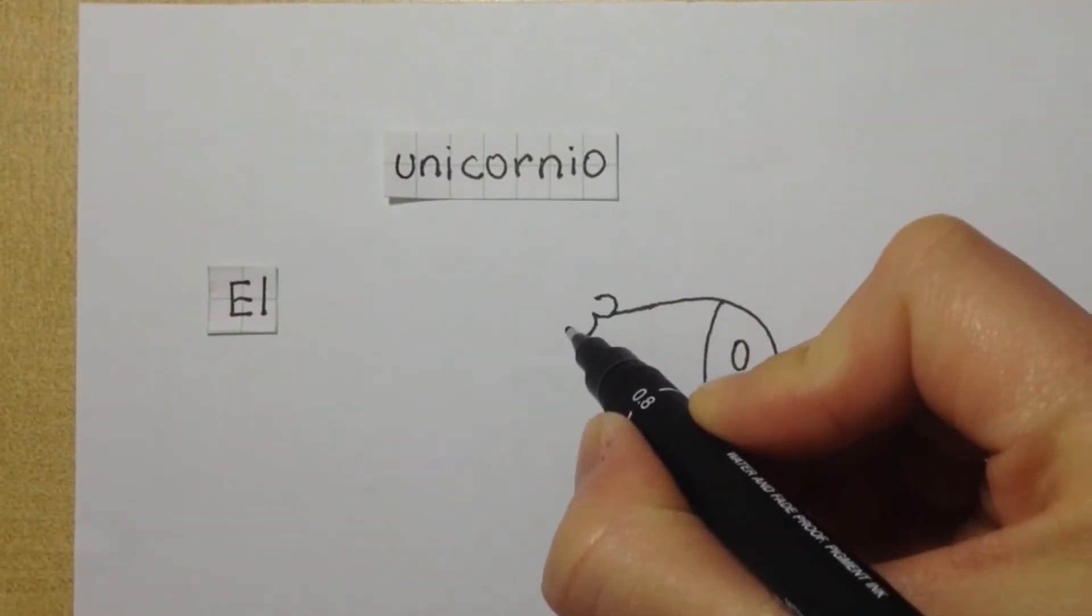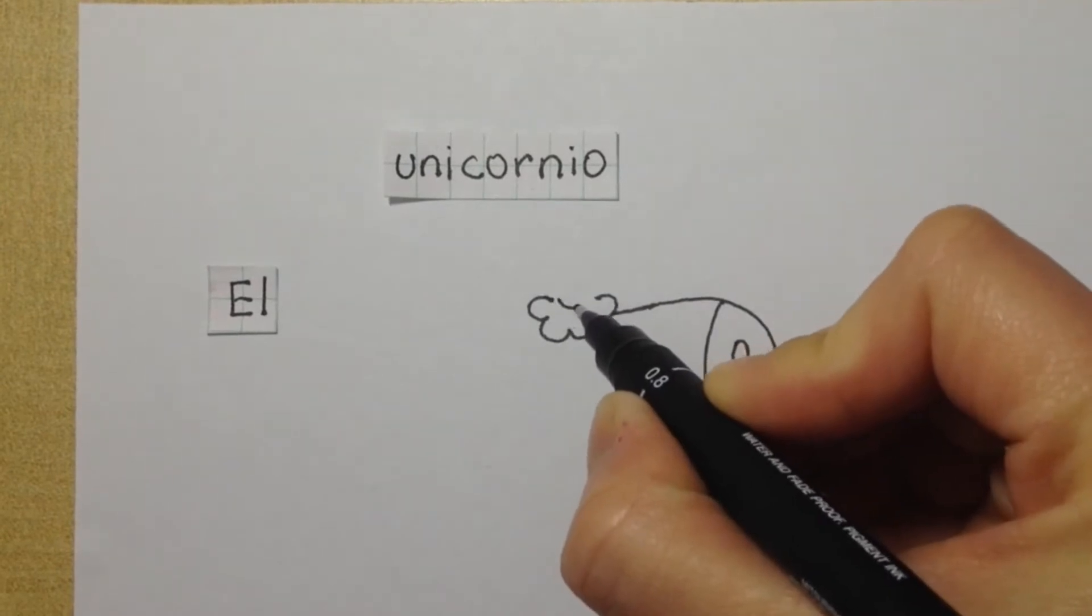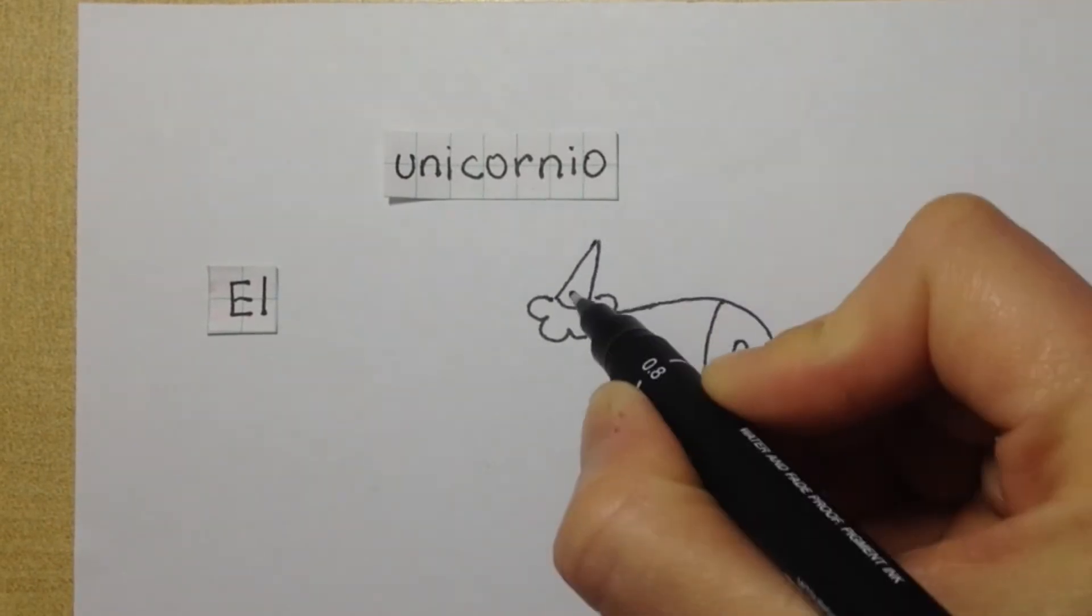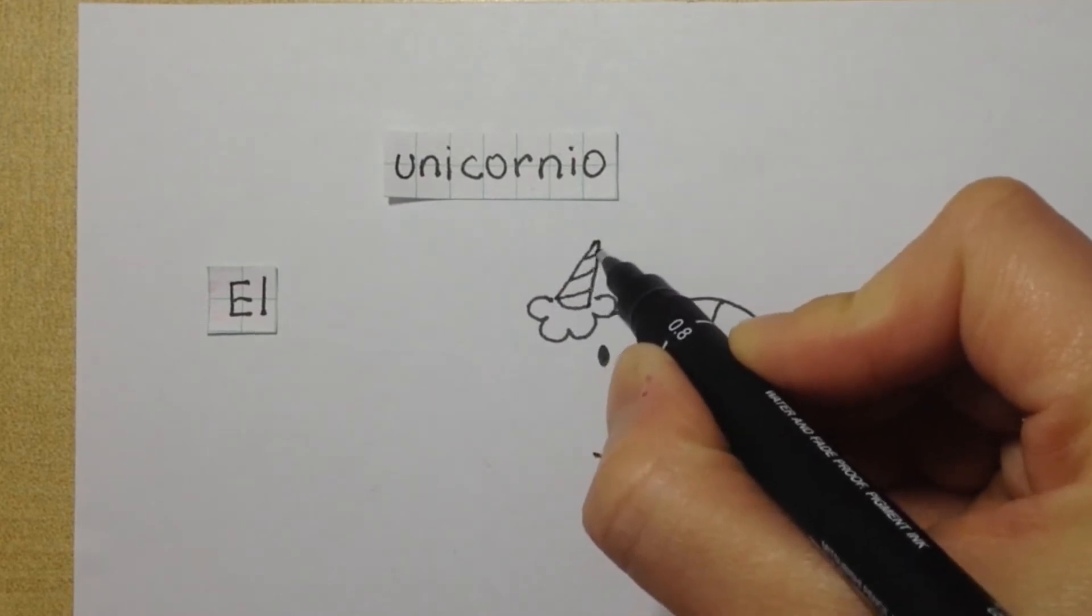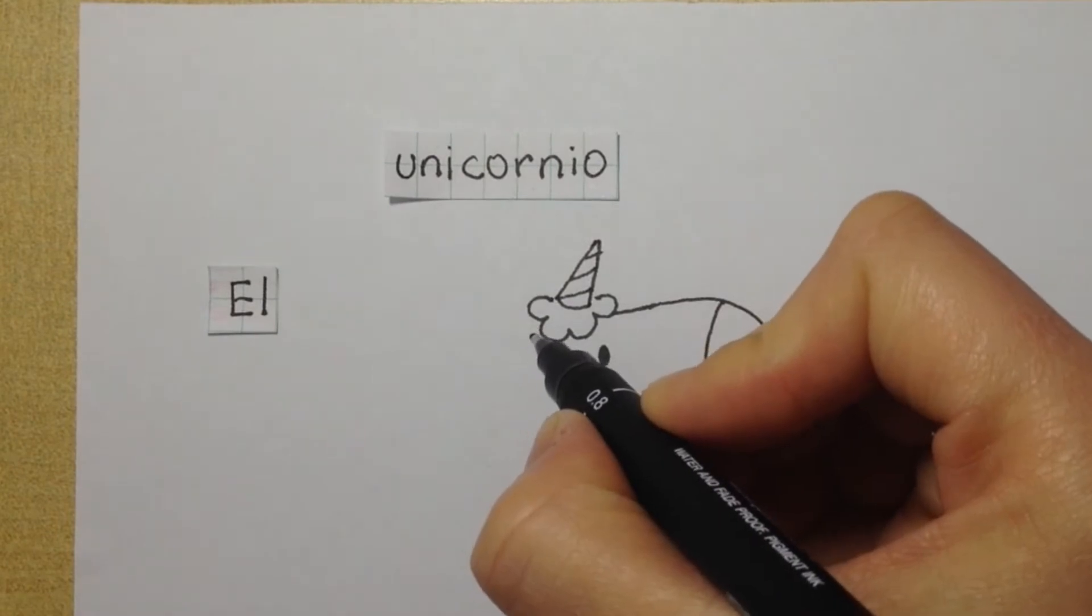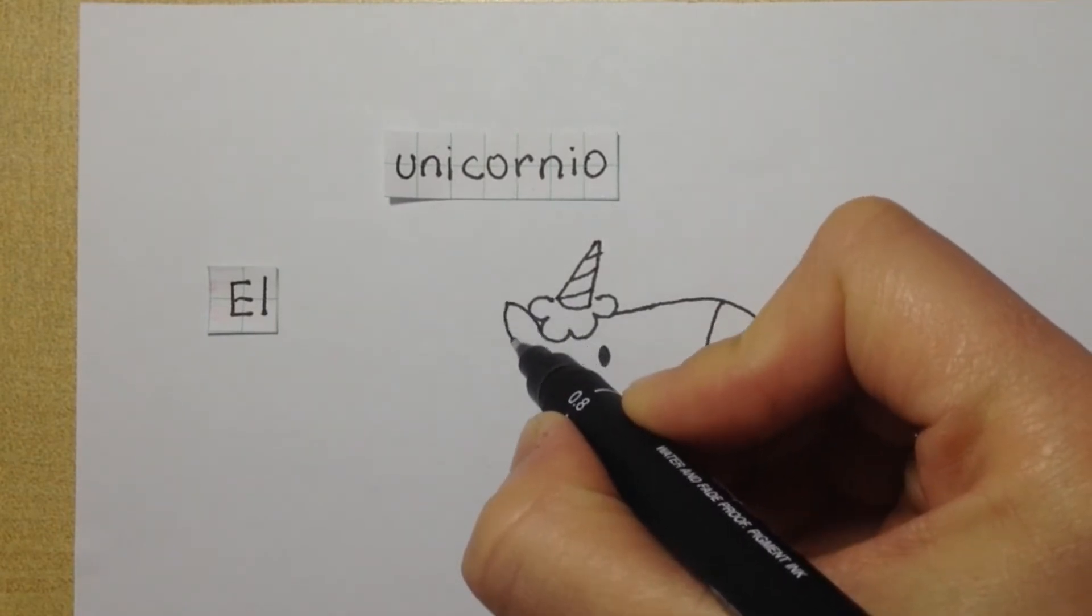Now the little hair on the top of his head and before we finish it, we do the horn. You can do it bigger than this or small and then one ear next to his hair.